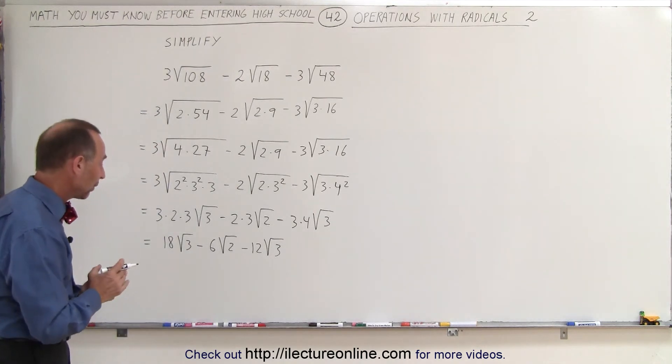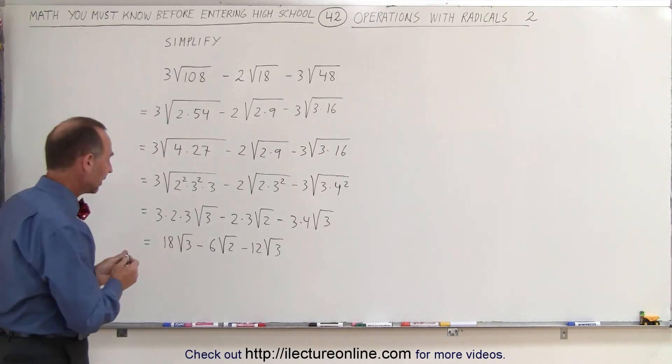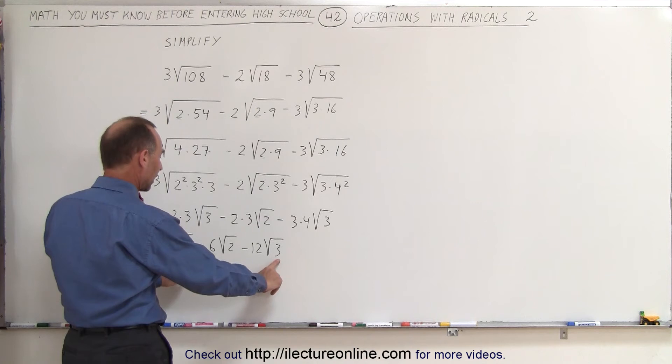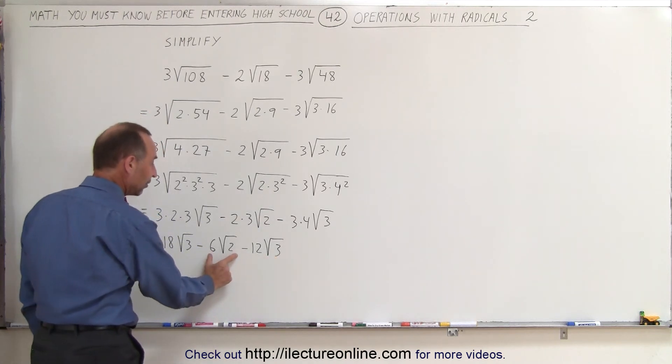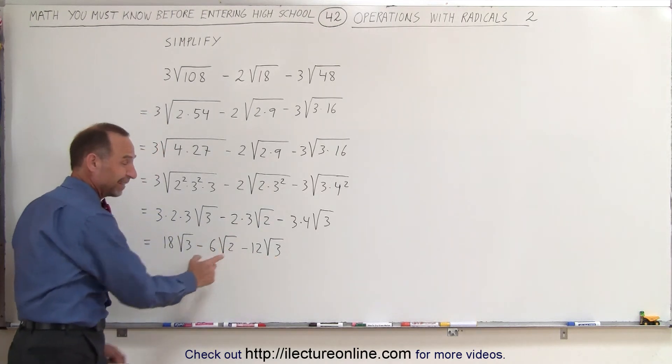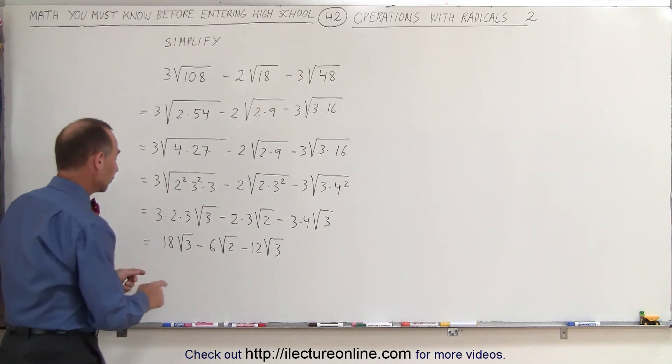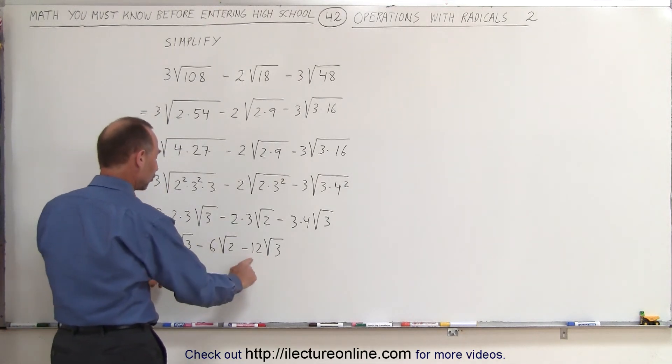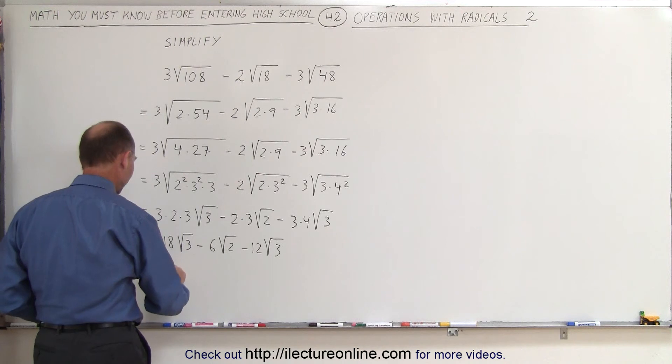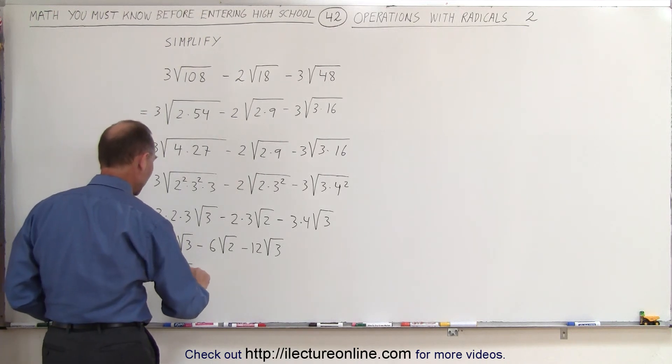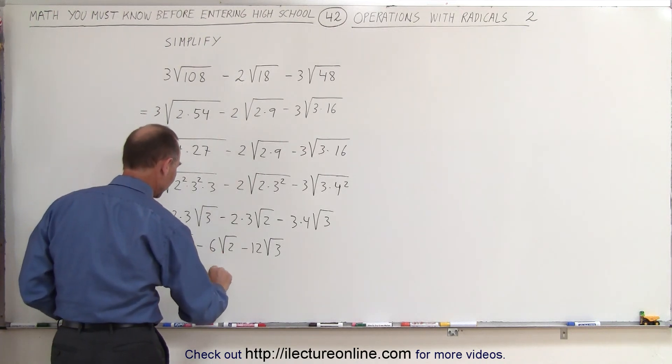Now let's combine radicals wherever we can. Notice that these have the same number underneath the radicals, so they can be combined, but this one has the square root of 2, which is different, so they cannot be combined. So in this case, we'll combine these two. 18 minus 12, which gives us 6 times the square root of 3 minus what we have left here is 6 times the square root of 2.